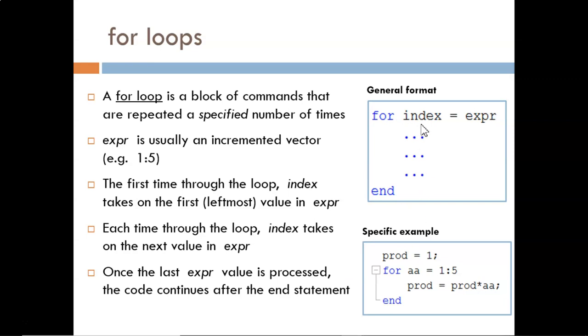So in the bottom example, aa is our index variable. This index variable will take on one value from a vector, then the commands in the loop will be processed, and then the index variable is updated and so on. Normally the expression that defines this vector is an incremented vector, which allows the index variable to change at constant intervals each time.